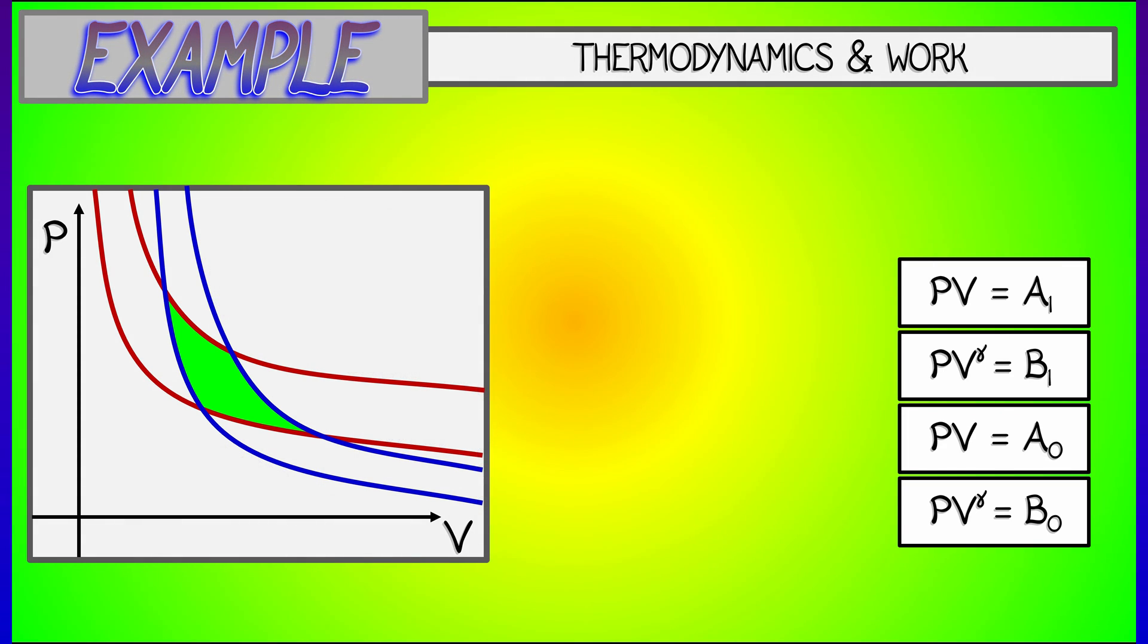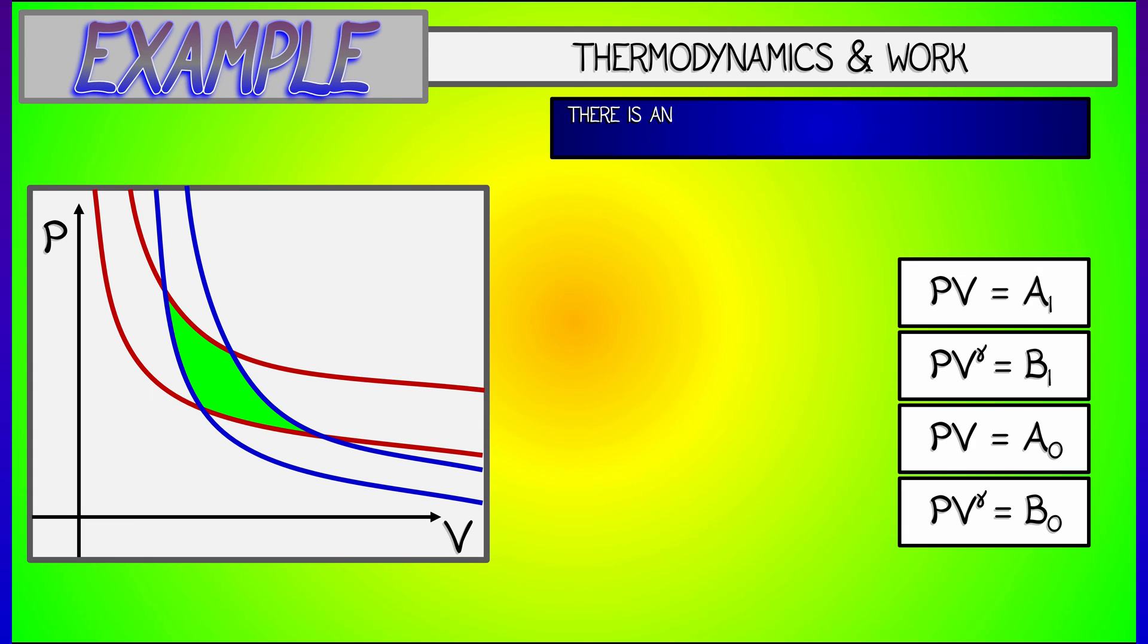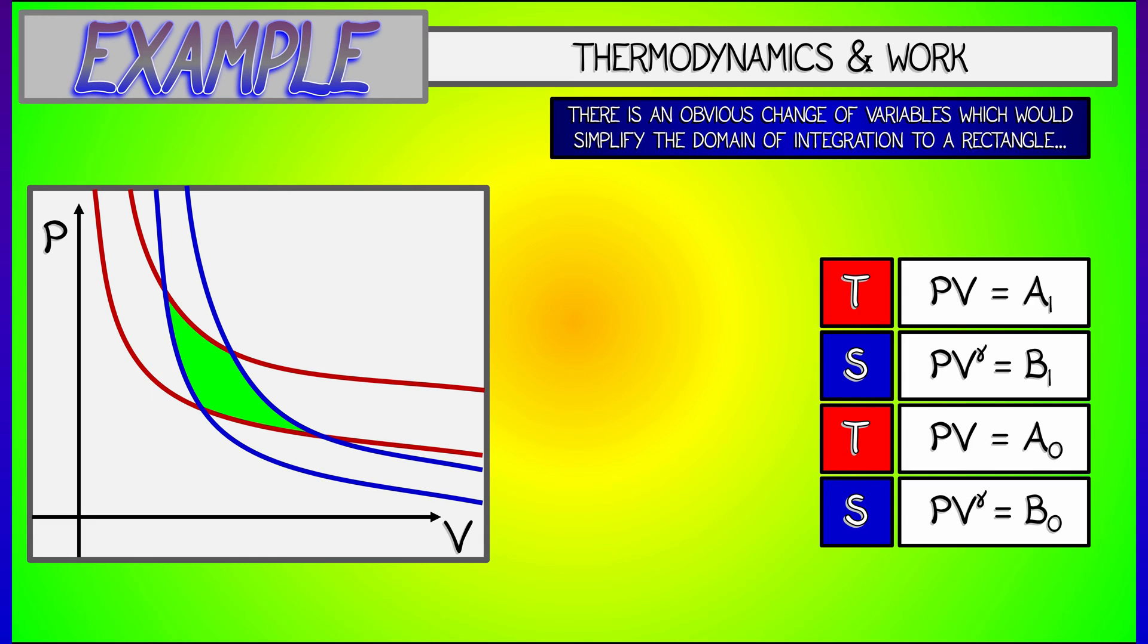Wouldn't it be nice if some of the things that we've been learning would be helpful in computing that? Well, it's kind of obvious that there's a change of variables that would make this region so nice. We should use what we are given, but instead of calling these new variables U and V, since V is already taken, let's call them, I don't know, T and S.